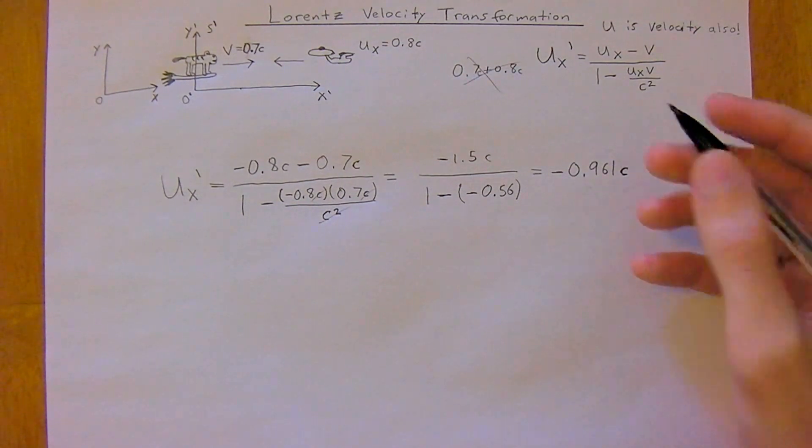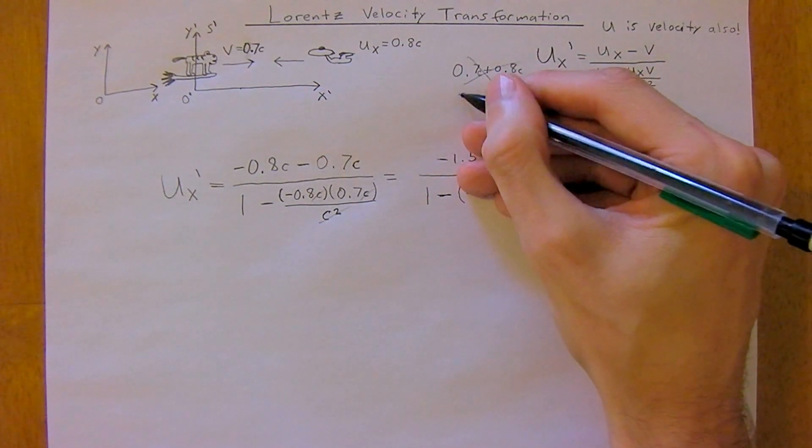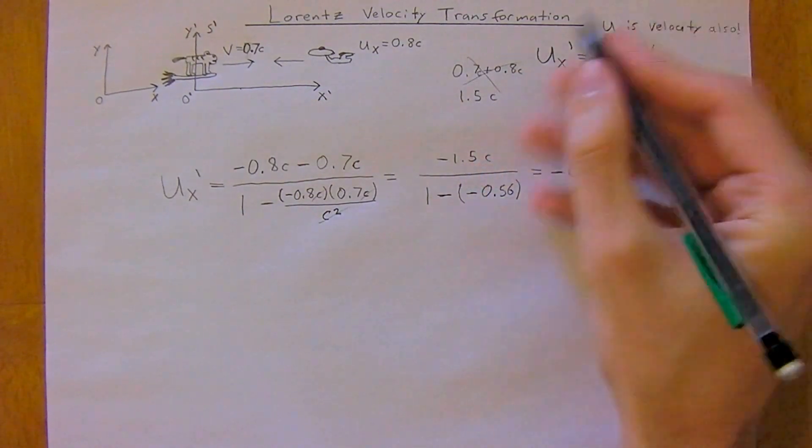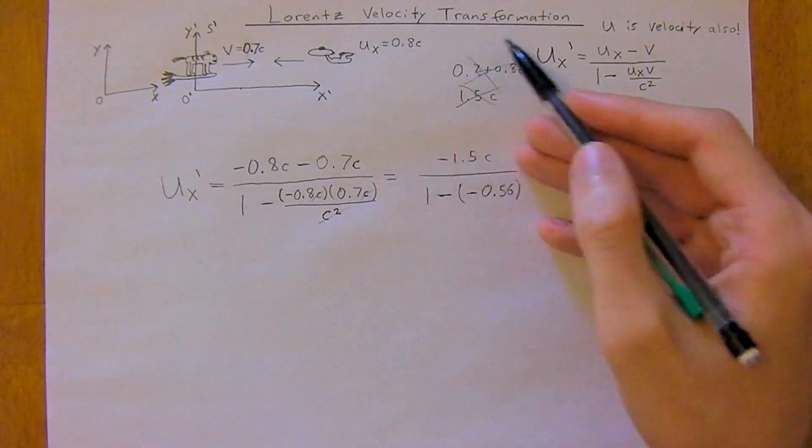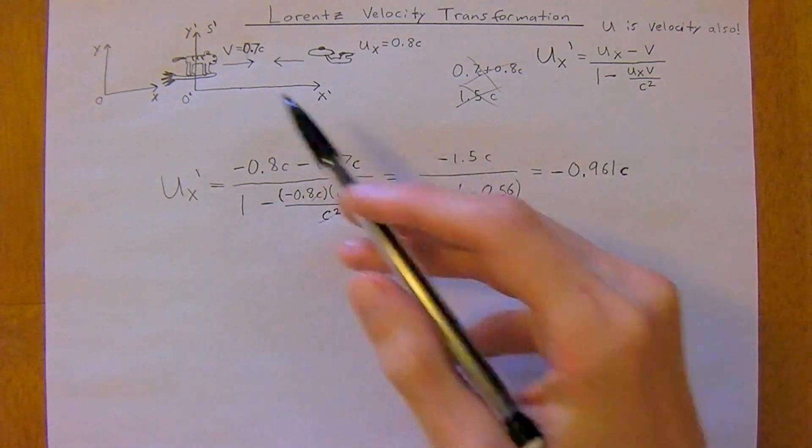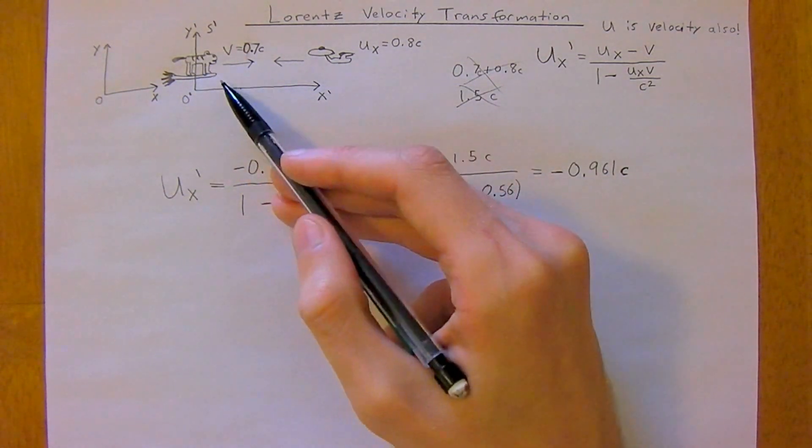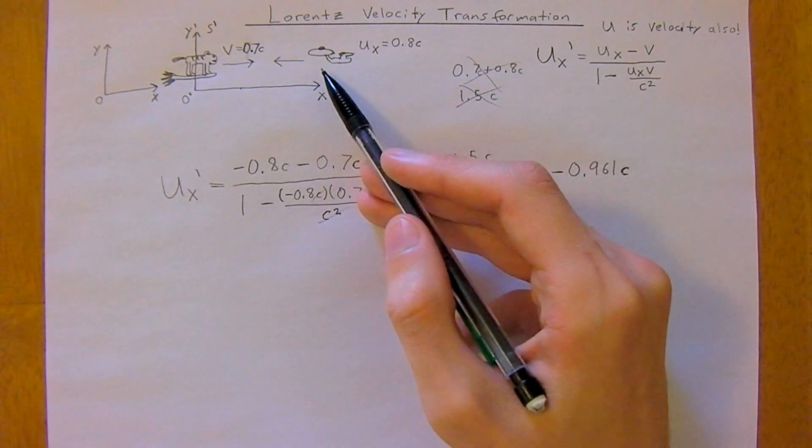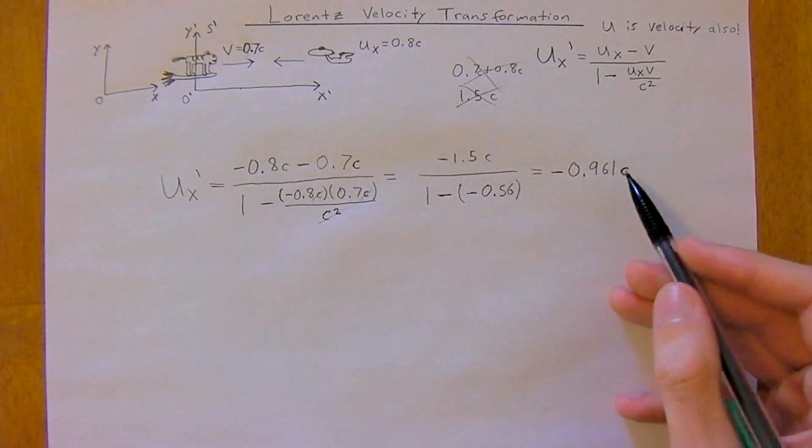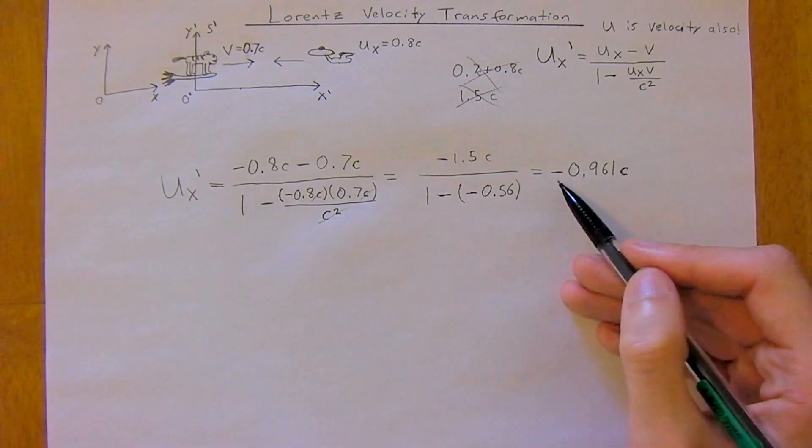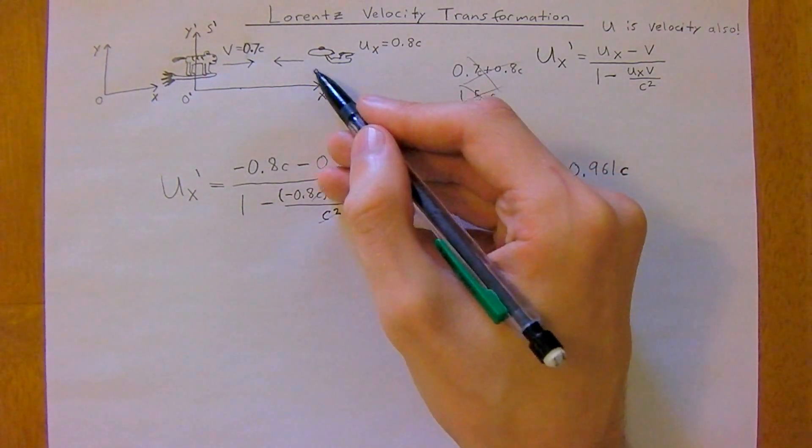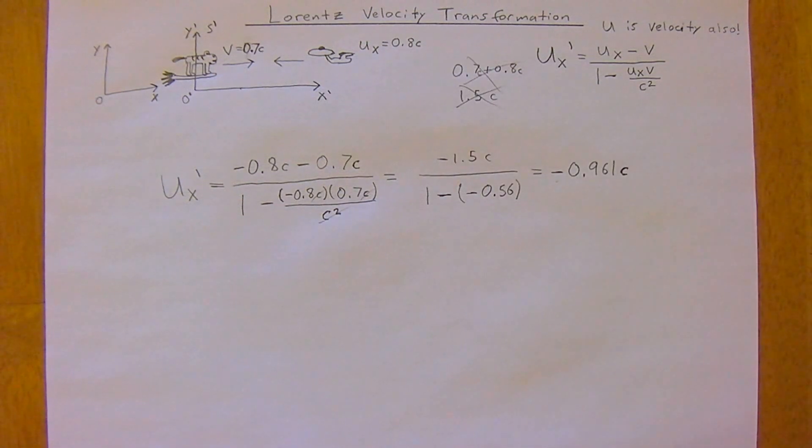You can see that we haven't broken any laws of physics because we haven't exceeded the speed of light. In the traditional way this would be 1.5C, but you can't have that. So thanks to the Lorentz velocity transformation, from the cat's perspective the Enterprise is approaching at negative 0.961C. The negative sign is just because it's heading left on the x-axis. That is essentially it. Thank you for watching.